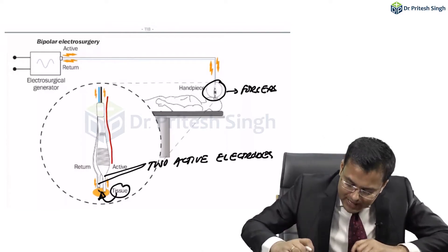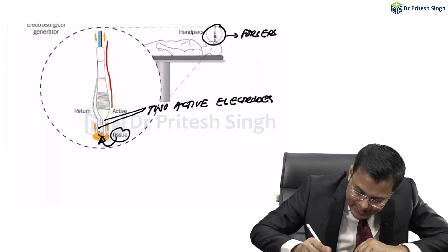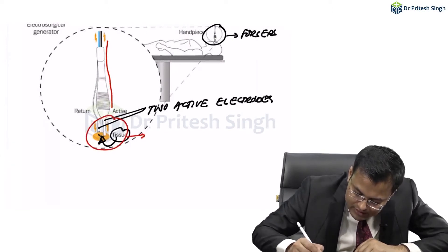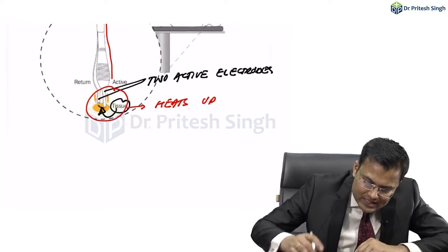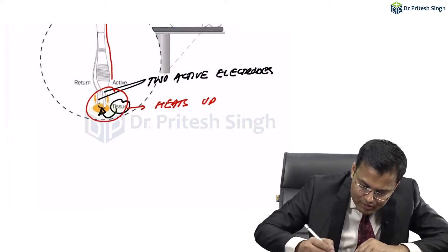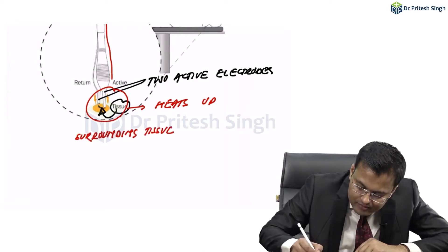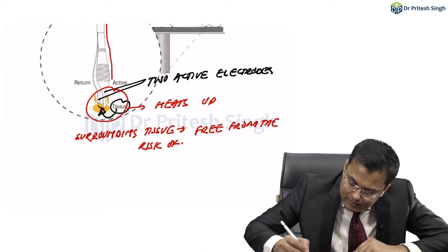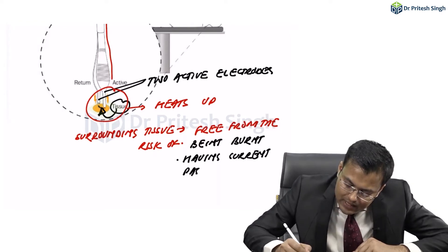In bipolar diathermy, the tissue held between the electrodes heats up. The advantage of bipolar diathermy is that surrounding tissue is free from the risk of being burnt and having current passed through them.